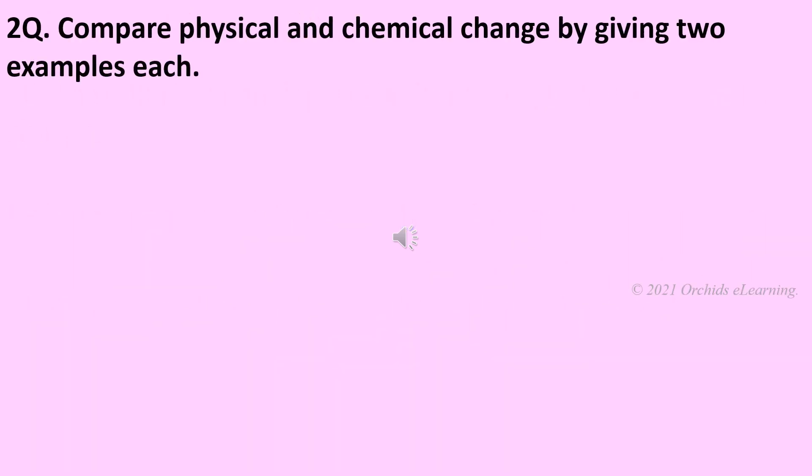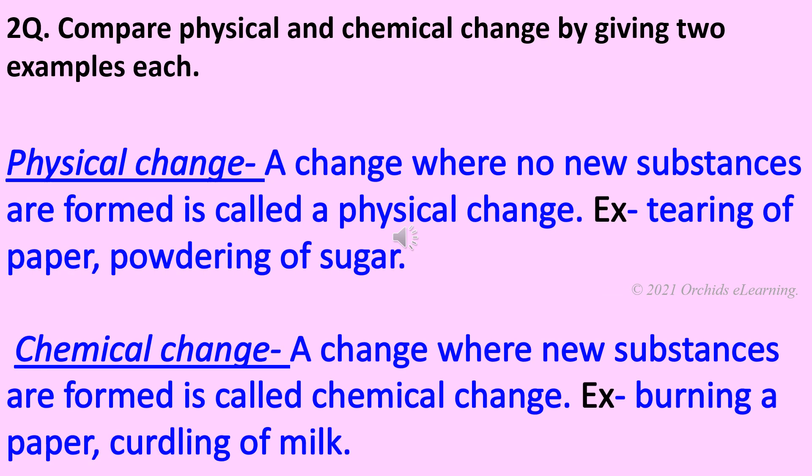Compare physical and chemical change by giving two examples each. Physical change: a change where no new substances are formed is called a physical change. Examples: tearing of paper, powdering of sugar. Chemical change: a change where new substances are formed is called a chemical change. Examples: burning paper and curdling of milk.